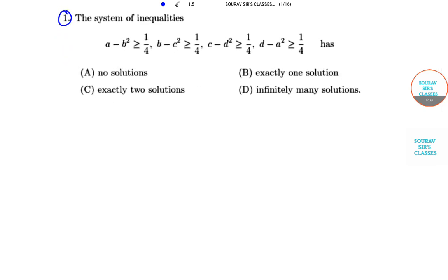Let's come to the point now. Here we have a system of inequalities: (a - b)² ≥ 1/4, (b - c)² ≥ ... and so on. We want to know whether this system has any solution or not, and if it does, how many — exactly one, two, or infinitely many solutions.